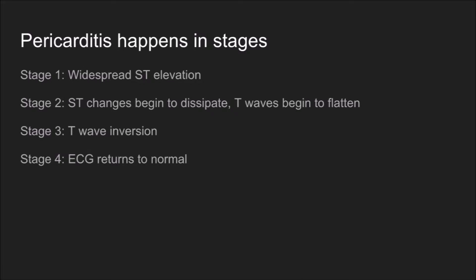What is it that we see in pericarditis that's usually a bit different? One thing most people either don't know or weren't taught is that pericarditis happens in stages. Stage one is where we see the widespread ST elevation — that's only one of four stages. In stage two, the ST changes begin to dissipate and T waves begin to flatten out. In stage three, the T waves actually invert, looking like global ischemia. And in stage four, you can actually find a normal EKG.